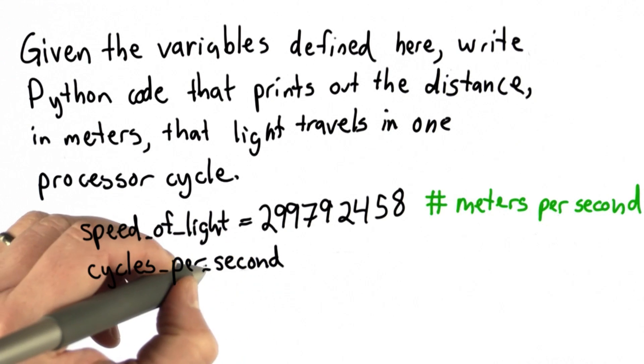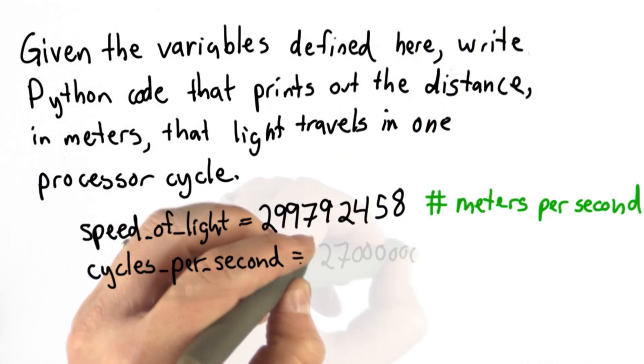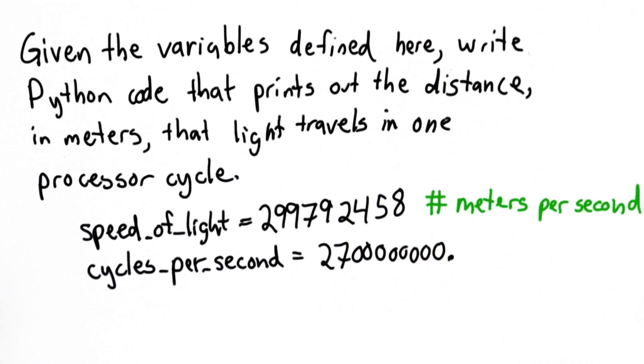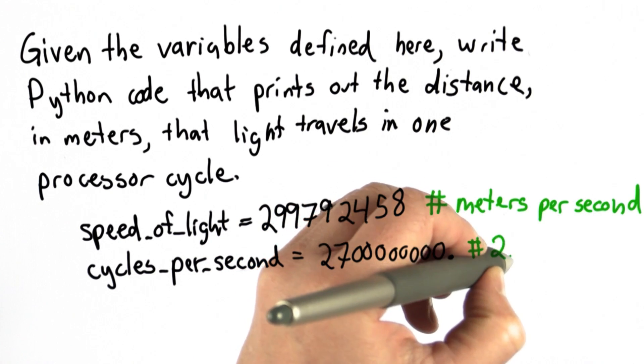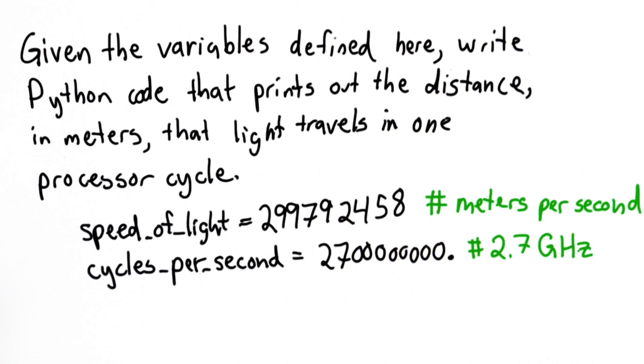The second variable we'll call cycles_per_second, and we'll give it the value 2,700,000,000. I'm going to add a decimal point so when Python does division, we'll get exact results. We'll also add a comment to indicate that this is the 2.7 GHz speed of the processor in my computer.